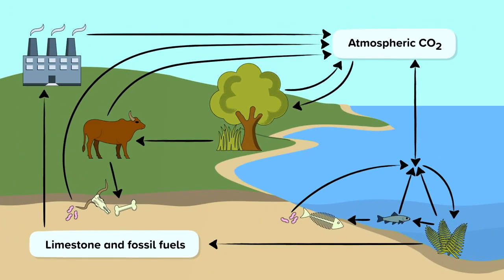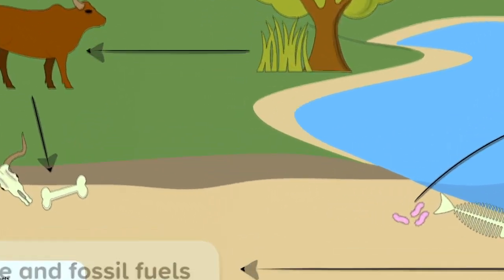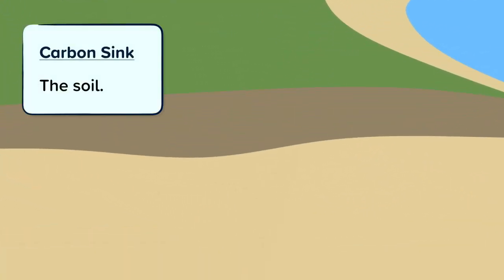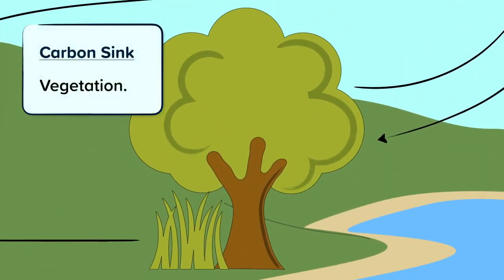There are three important carbon sinks. Carbon sinks store carbon and carbon compounds. The first is the soil, the second is the ocean, and the third is vegetation — so plants like trees.